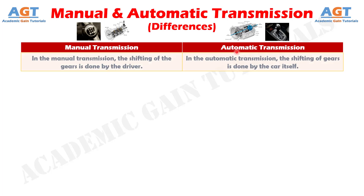Difference number 1. In the manual transmission, the shifting of the gears is done by the driver, whereas in the automatic transmission, the shifting of gears is done by the car itself.